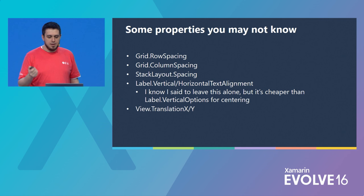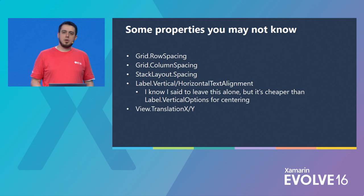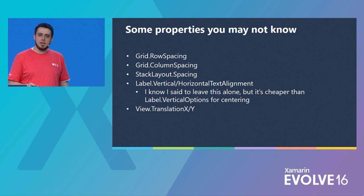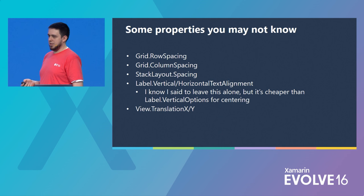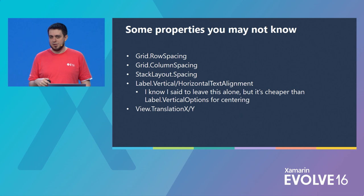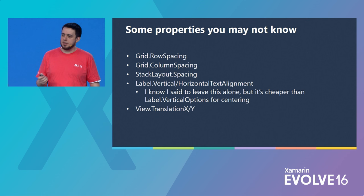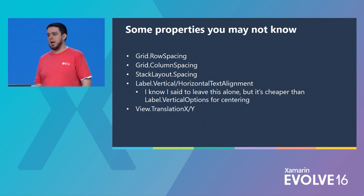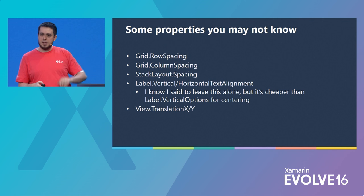I want to make sure you're all aware of some really nice properties you may not know about. Grid row spacing and column spacing can save you from adding extra columns and rows you wouldn't otherwise need. Same thing with stack layout spacing — it can save you from putting in transparent box views. The label has vertical and horizontal text alignment, which are fast. We also have translationX and translationY properties, which are post-layout transforms you can apply to a view.